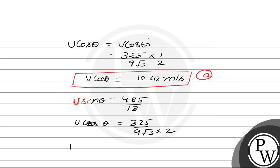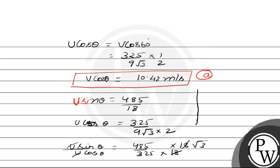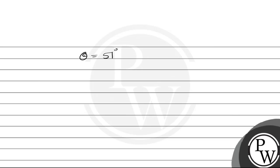Dividing u·sinθ by u·cosθ, we get tanθ = (485/18) ÷ (325/18·√3/2) = 47√3/65. Therefore θ = tan⁻¹(47√3/65), and calculating this, θ comes out to be 51 degrees. This is the solution to part (b) of this question.